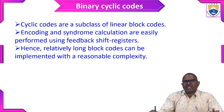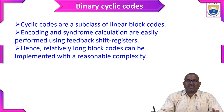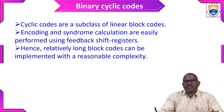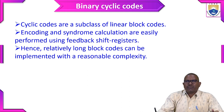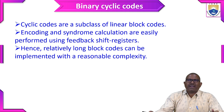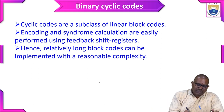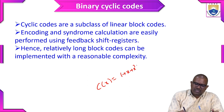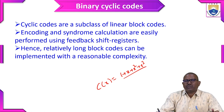In block codes it is just blocks — that is, a matrix. The block codes are generated using the formula c equals m times G, where we multiply the message block with the generator matrix to find the block code. But in cyclic codes the code is expressed as a polynomial: 1 plus x plus x squared plus x cubed, and so on. That is the key difference.